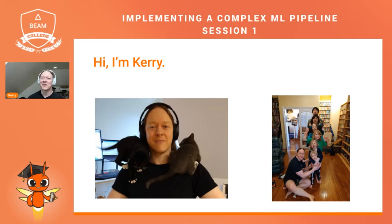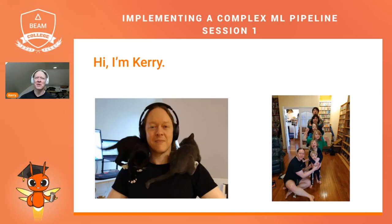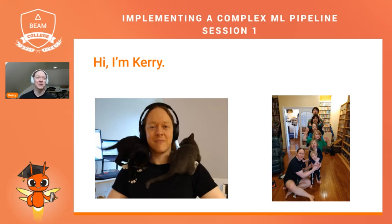I'm Kerry. I have two pictures I like to use to introduce myself. The left is me in my home office — I have two cats that will occasionally claw their way up to my shoulders. The other picture is me with my six children during a window when they were all exactly one head taller than the other. I work at Google on Apache Beam, specializing in machine learning and GPU usage, and I live in the woods in North Carolina.